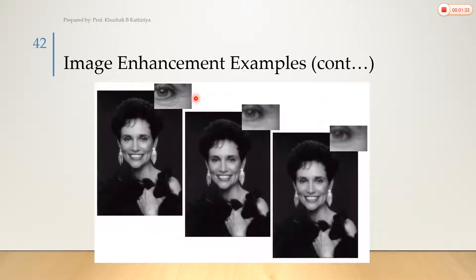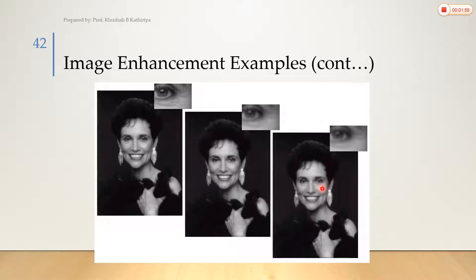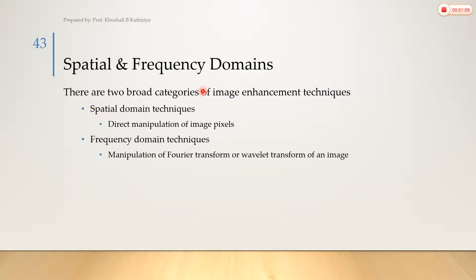This is also an example. This one has some edges or wrinkles in a particular image. After applying enhancement steps or some filters, we can remove this kind of edges from the image. Here we have dark edges, and in the enhanced image we have lighter edges. So this is the use of enhancement.